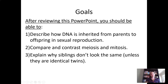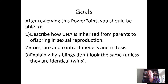For this lesson, we have three main goals. After reviewing this PowerPoint, you should be able to: first, describe how DNA is inherited from parents to offspring during sexual reproduction. Two, compare and contrast the process of meiosis, which is the form of cell division where gametes are produced, and the process of mitosis, which results in new body cells. And three, explain why siblings who have the same biological parents don't look the same — how can they have different traits if their DNA is coming from the same place?